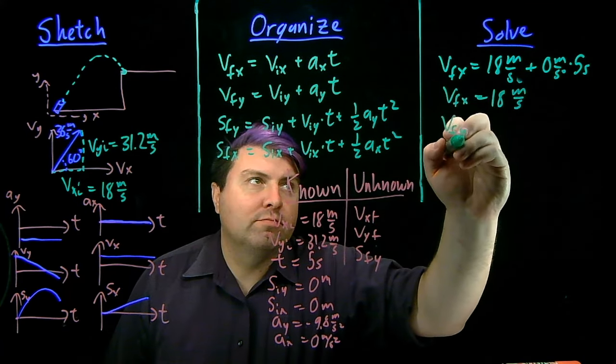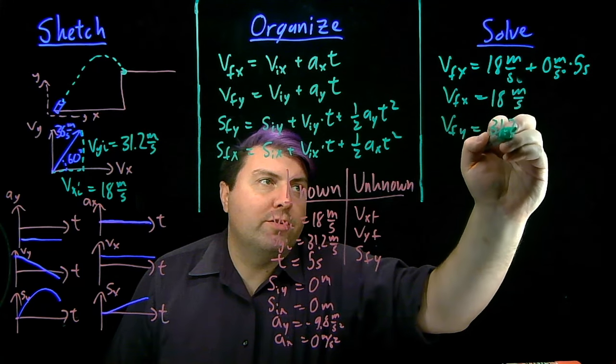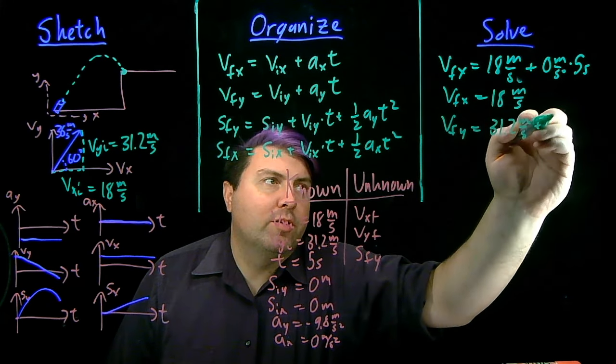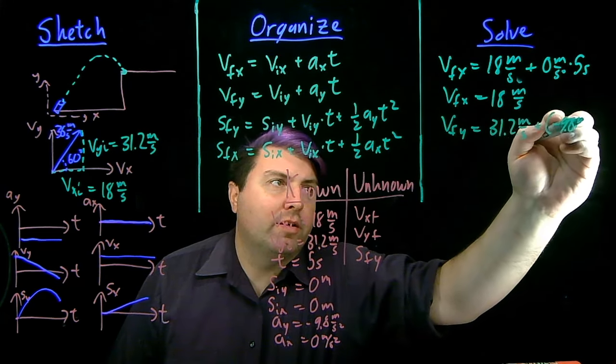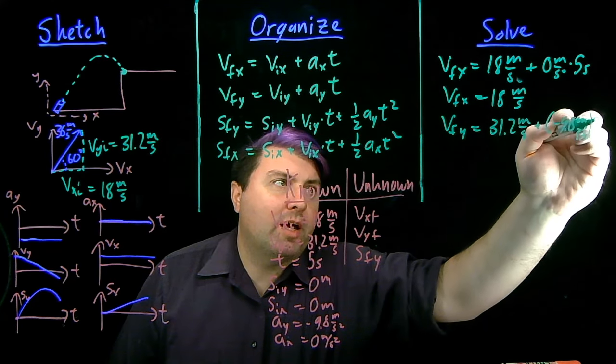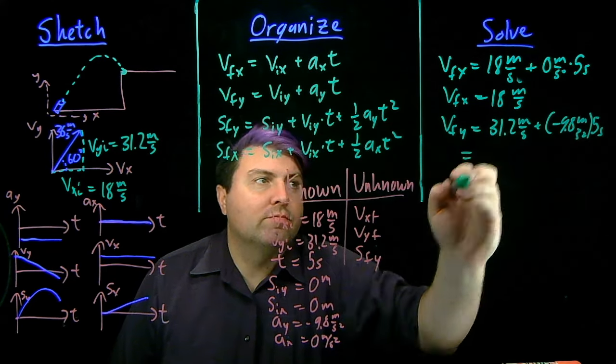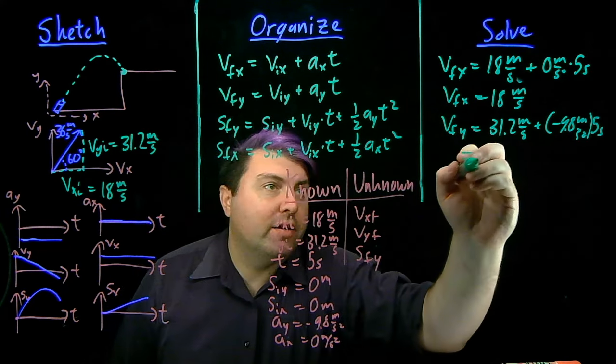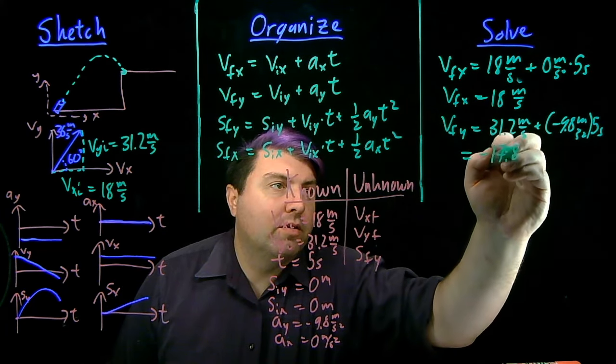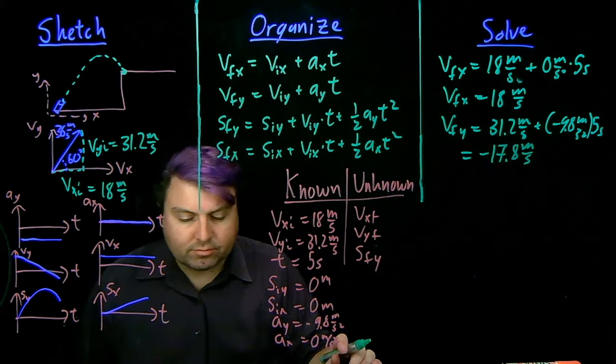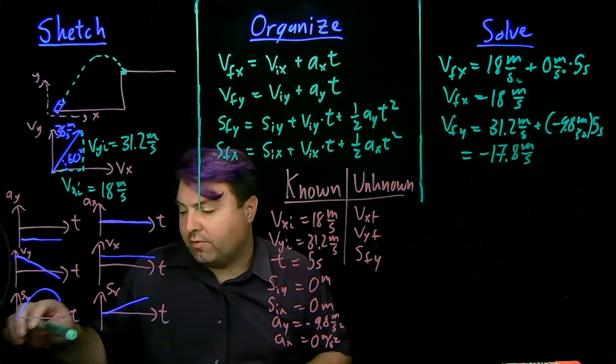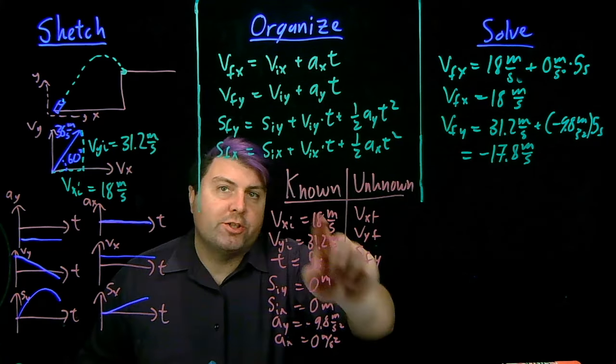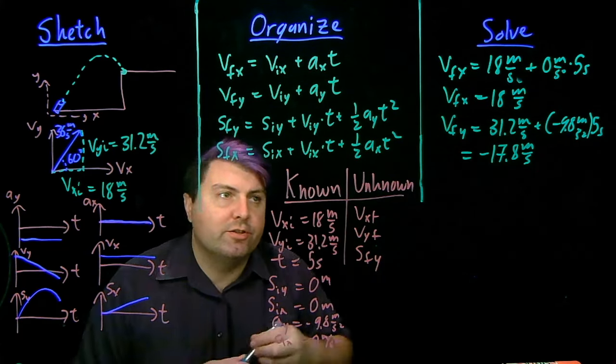Vfy is going to be 31.2 meters per second plus negative 9.8 meters per second squared times five seconds. So, that will get us a value of negative 17.8 meters per second.